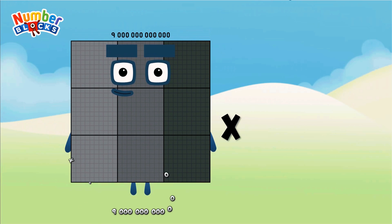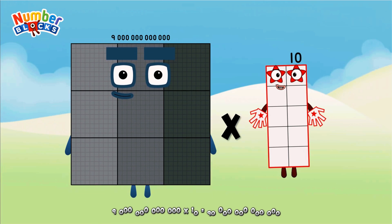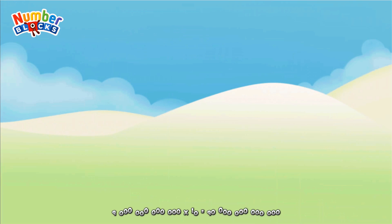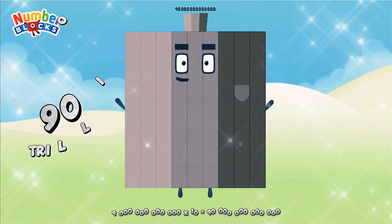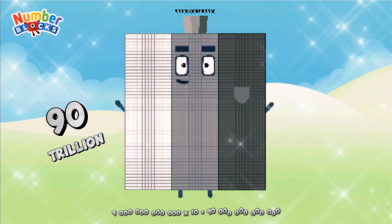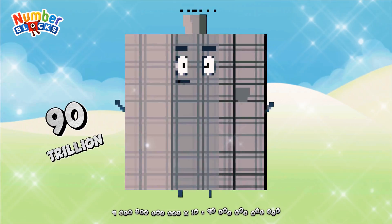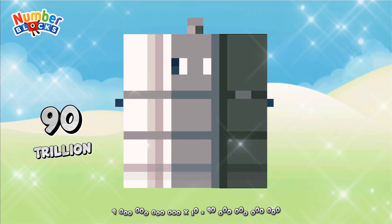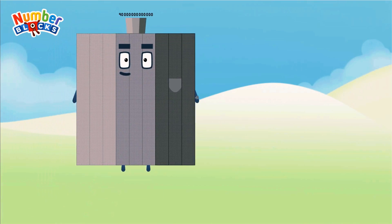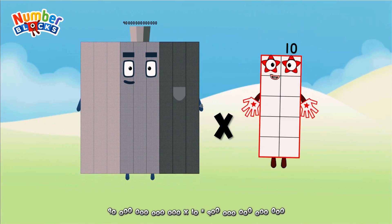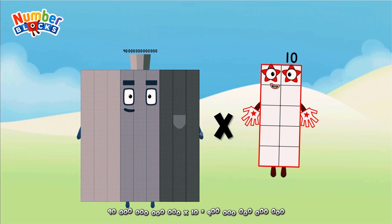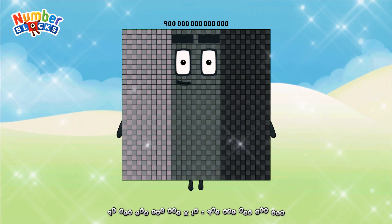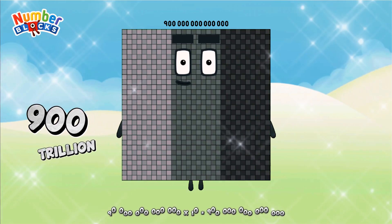9 trillion, multiplicated by 10, equals 90 trillion. 90 trillion, multiplicated by 10, equals 900 trillion.